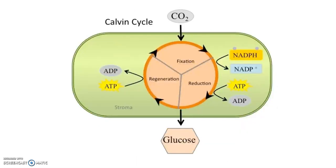The Calvin cycle happens in the stroma of chloroplasts. NADPH provides electrons, ATP gives energy to convert CO2 in the chloroplast and build your sugars.